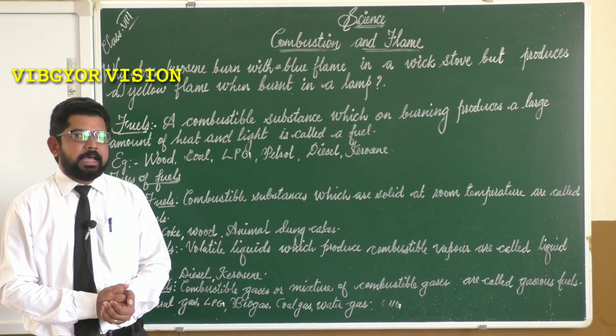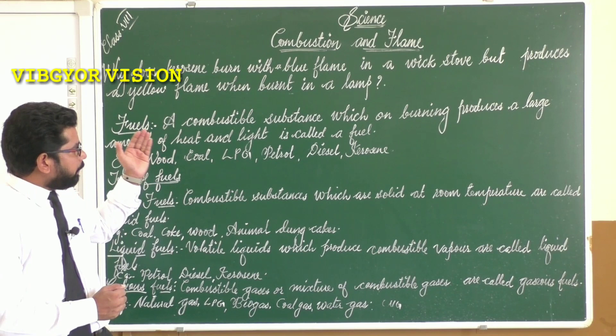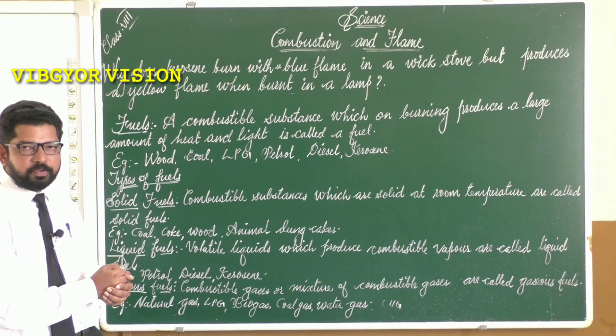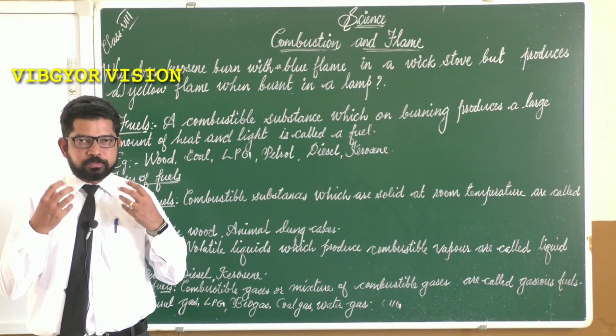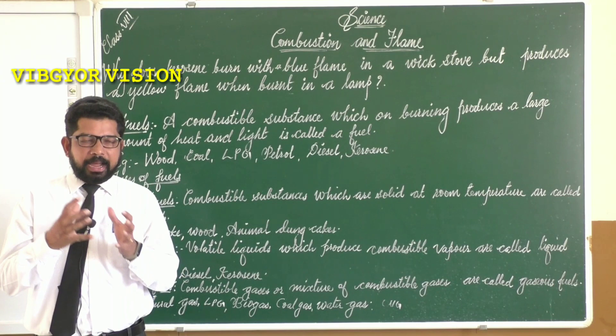Welcome back to our science class. We are continuing our lesson on combustion and flame. Let's go to our next topic: fuels. What is meant by fuel? A combustible substance which on burning produces a large amount of heat and light is called a fuel. A combustible substance means a substance which can combine with oxygen and produce heat and light.